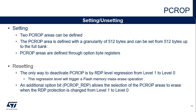The areas are protected against data accesses. Note that pages protected with the PC-ROP feature are also protected against write access, offering protection against unwanted page write or erase operations. The PC-ROP protection can only be removed by RDP level regression from level 1 to level 0; when executed, this mechanism triggers a full mass erase of the flash memory. Depending on the PC-ROP RDP option bit, the PC-ROP areas are erased when the RDP protection is changed from level 1 to level 0.